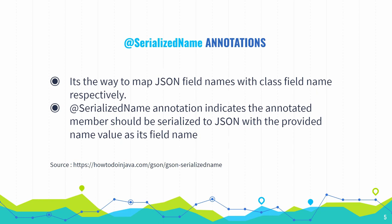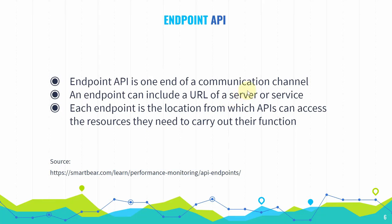Next is the endpoint API. Basically it's just an address or URL that we can access and retrieve data from to use in our apps. We can create an endpoint API using a language like PHP, put it on a server, and that PHP can output JSON strings which can be consumed by Volley.